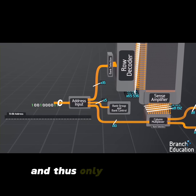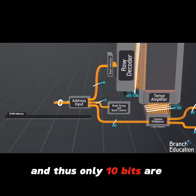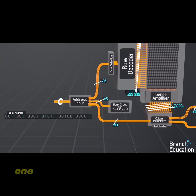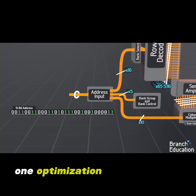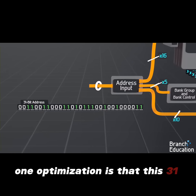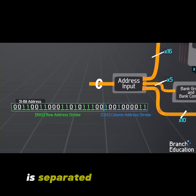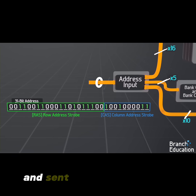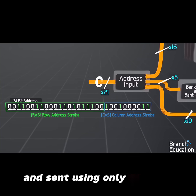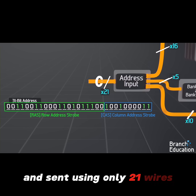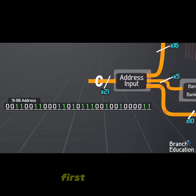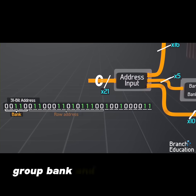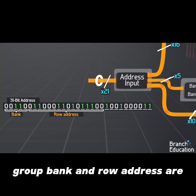Thus only 10 bits are needed for the column address. One optimization is that this 31-bit address is separated into two parts and sent using only 21 wires. First, the bank group, bank, and row address are sent, and then after that the column address.